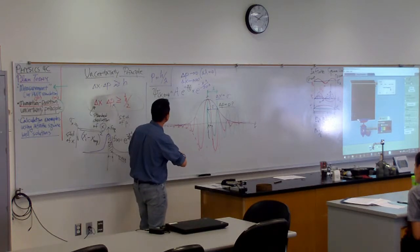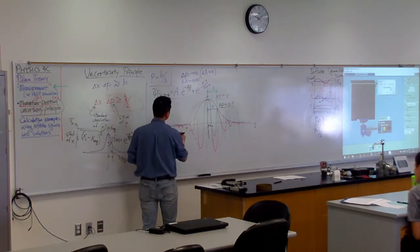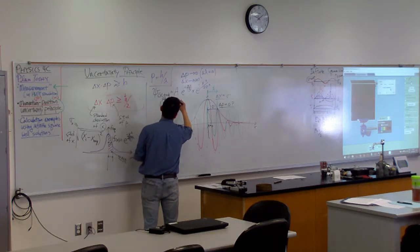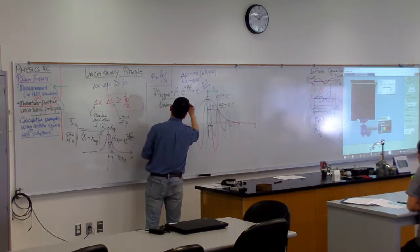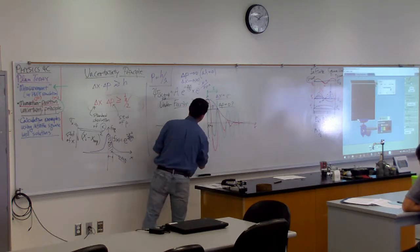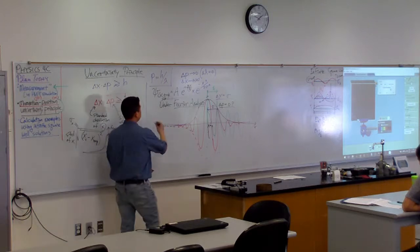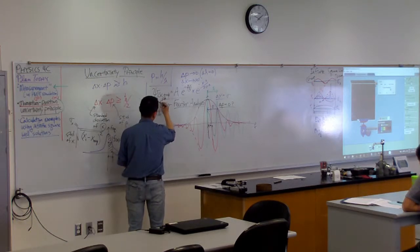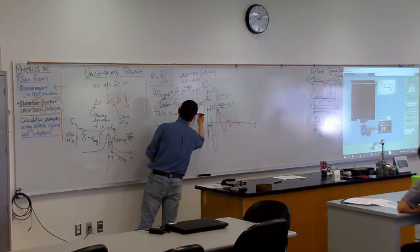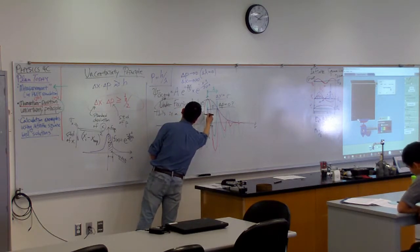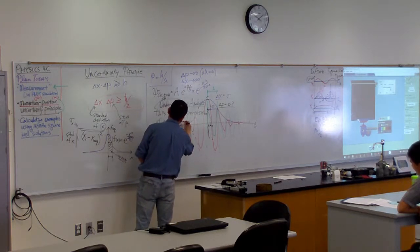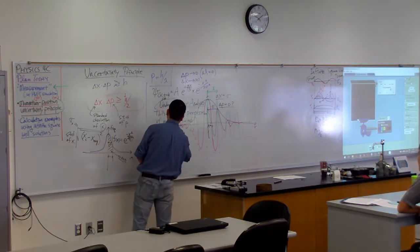I guess I'm kind of running out of time. So, let me just call this, so let me put it this way. Under something called Fourier analysis, an aspect of which you will see in one of the simulations that you are doing in the lab. This, meaning this, is a superposition, meaning sum of many different wavelengths.